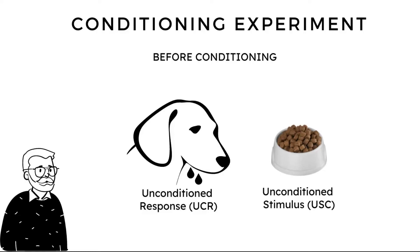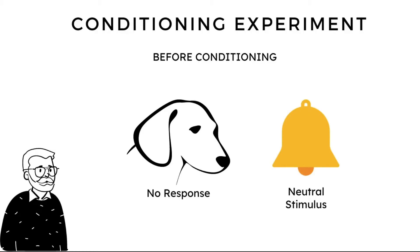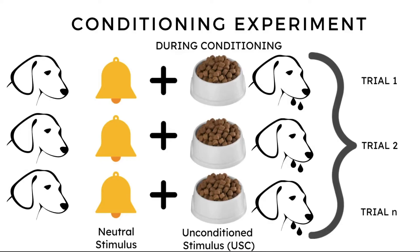In the before conditioning phase, Pavlov presented the dogs with the unconditioned stimulus — in his case, meat powder — which led the dogs to produce an unconditioned response such as salivation. He then presented the dogs with a neutral stimulus, the sound of a bell, and the dogs made no response. In the during conditioning phase, Pavlov repeatedly presented first the neutral stimulus — the sound of the bell — immediately followed by the unconditioned stimulus, the meat powder. He did this across many trials, as shown in the schematic, repeating this for a long duration.